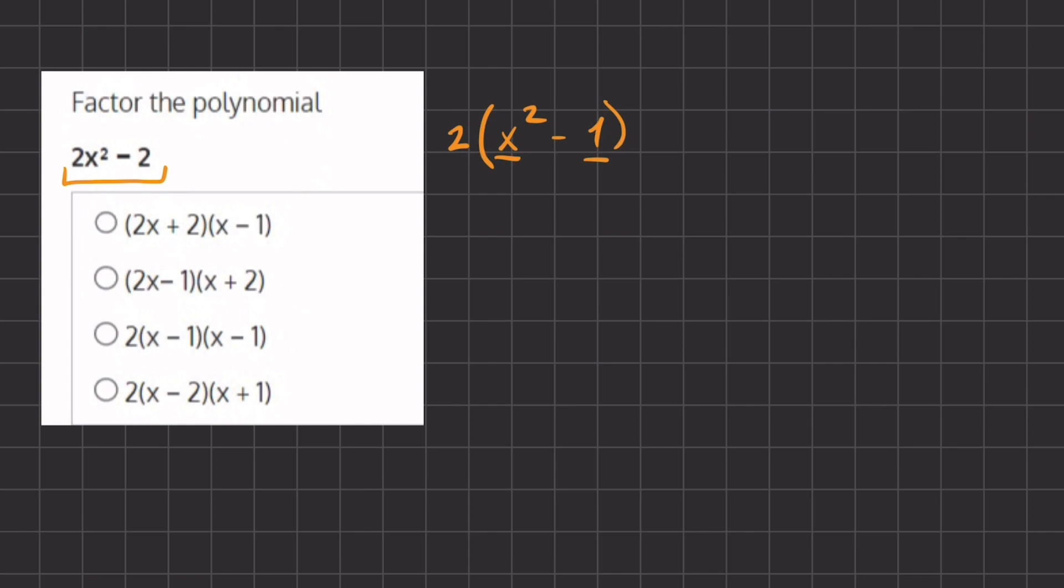The way that we factor a difference of squares is x plus a times x minus a, which is a very simple way of factoring once you recognize that you have a difference of squares.